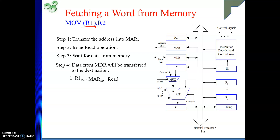Once that is done, we need to wait for MFC. In the same cycle where we gave the read signal, we cannot give WMFC. So in the next clock cycle, we issue WMFC. It is not guaranteed that WMFC will complete within one clock cycle — depending on the speed of memory, it may take one, two, or three cycles before memory gives us the data and the MFC signal. Generally, one clock cycle corresponds to one step, but when WMFC is involved, the step may span multiple cycles.